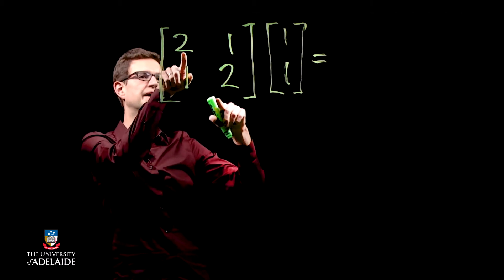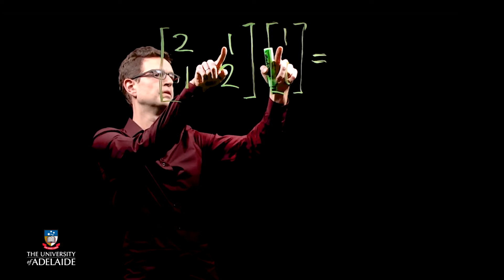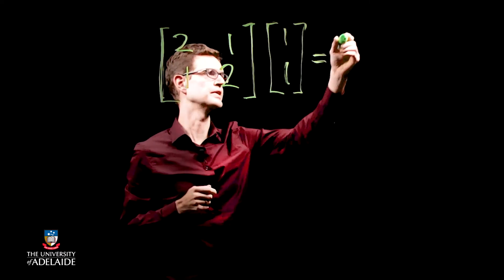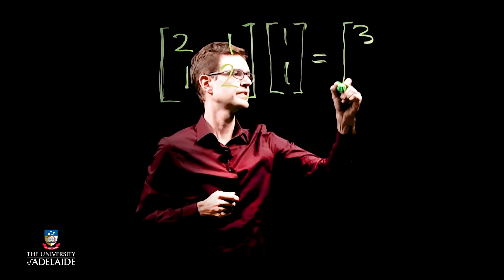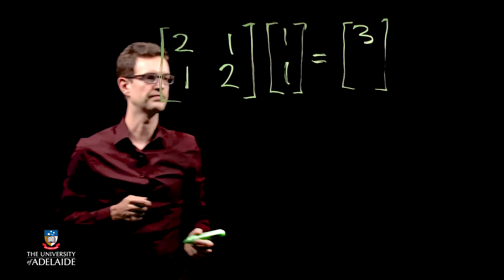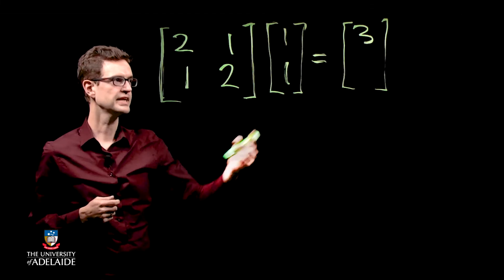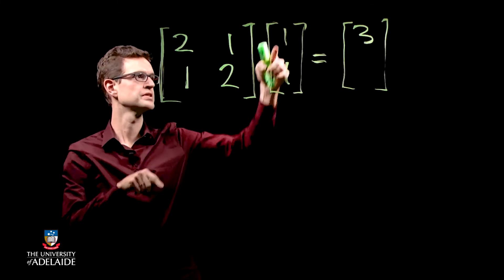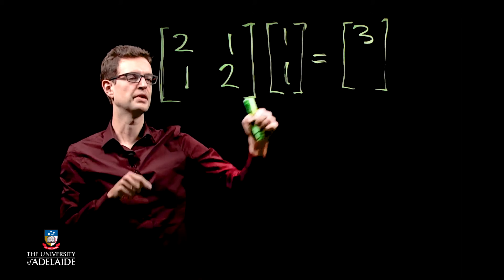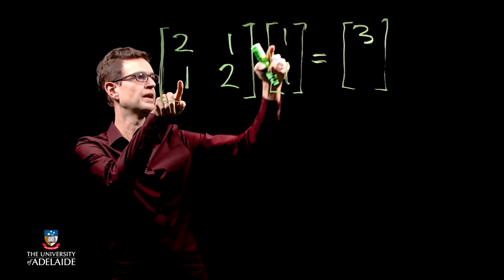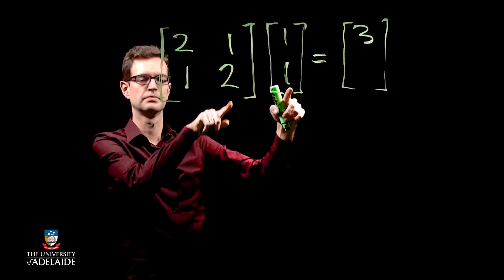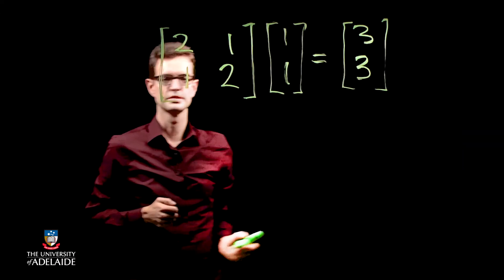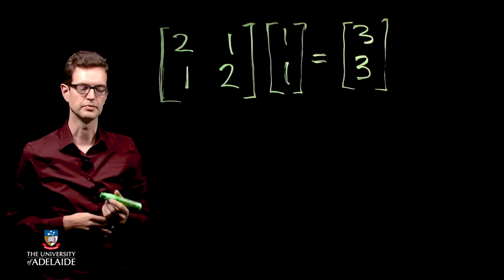You go two times one plus one times one, which is three. That goes into the first row of our result vector. To get the second row, you take the second row of the matrix and multiply it by the vector: one times one plus two times one is three again. So that's our result vector and that's how you do the matrix multiplication.